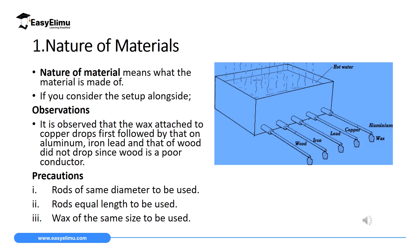The first factor that affects thermal conductivity in solids is the nature of material — meaning what the material is made of. To investigate how nature of material affects thermal conductivity, you take the materials you want to investigate and dip them inside hot water. As you can see on the screen, we have a set of hot water, and the materials we are investigating are wood, iron, lead, copper, and aluminium.